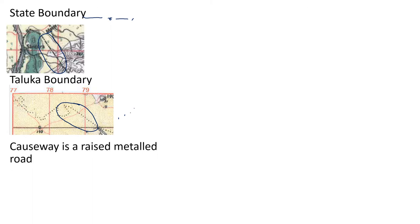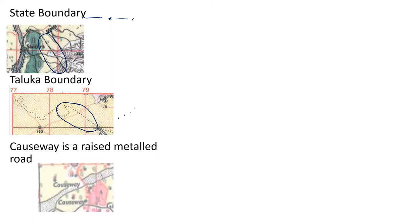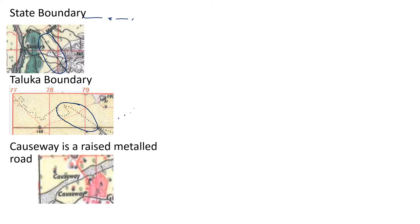Next is causeway, which is a raised metal road. It is written here as causeway. This is a small raised way so that people are able to travel even during the rainy season.